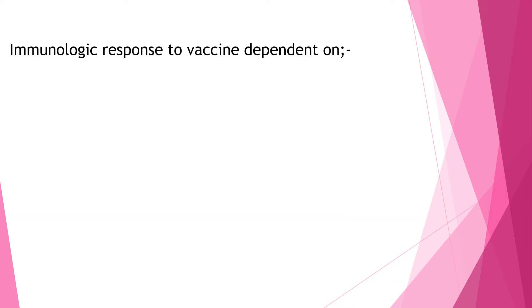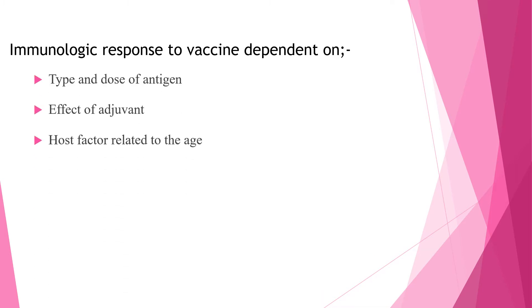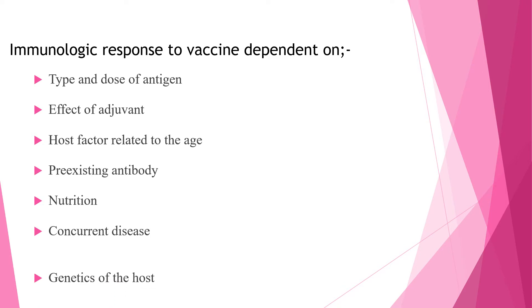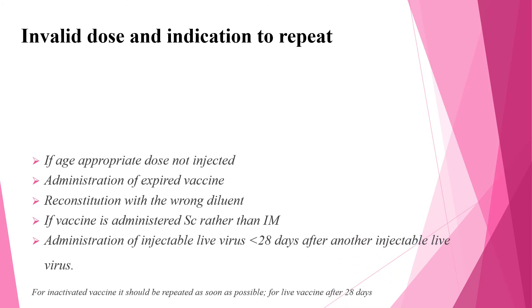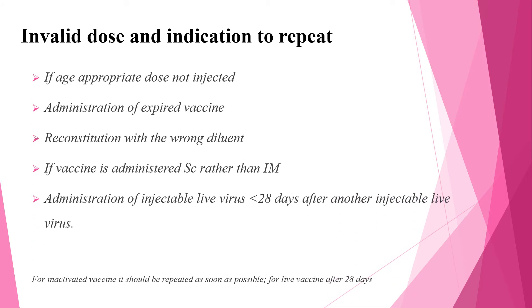Immunologic response to a vaccine depends on type and dose of antigen, effect of adjuvant, and host factors related to age, pre-existing antibody, nutritional status, concurrent disease, and genetics of the host. Invalid dose indications to repeat after vaccination include: age-appropriate dose not injected, administration of expired vaccine, reconstitution with the wrong diluent, and if vaccine is administered subcutaneous rather than IM.